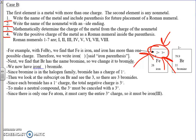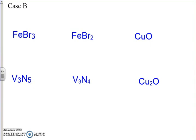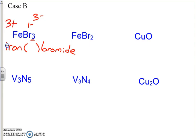Let's do some examples. Following the directions, we write the name of the metal — iron — place parentheses, and then write the non-metal with an -IDE ending. Br is element 35, so it becomes bromide. At the top of bromide's column there is a one negative charge, meaning bromides are one negative. But there are three of them, so the total charge on the bromides is three negative. Chemical compounds must always be neutral, so the iron must be three positive to balance it out. There's only one iron, so we call this iron(III) bromide.